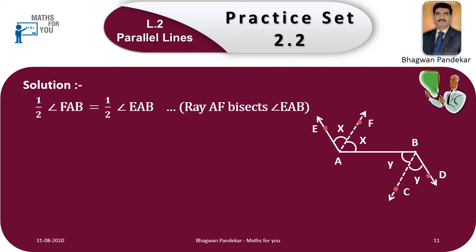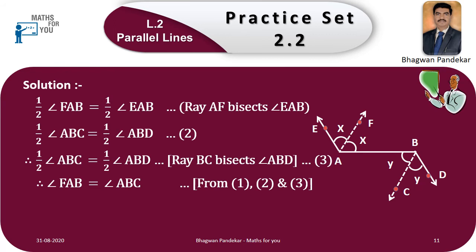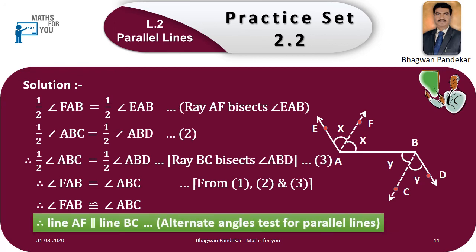Since ray AF bisects angle EAB: (1/2) × angle FAB = (1/2) × angle EAB (equation two). Since ray BC bisects angle ABD: (1/2) × angle ABC = (1/2) × angle ABD (equation three). From equations one, two, and three: angle FAB = angle ABC. Therefore, angle FAB ≅ angle ABC. Therefore, line AF is parallel to line BC by the alternate angle test for parallel lines.